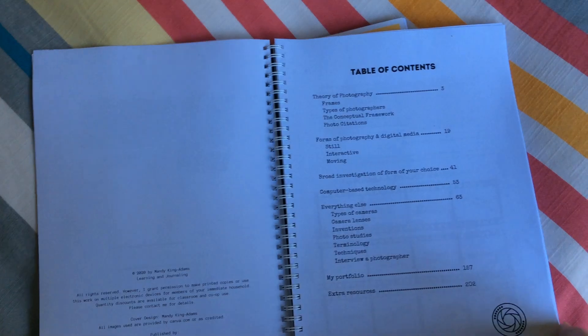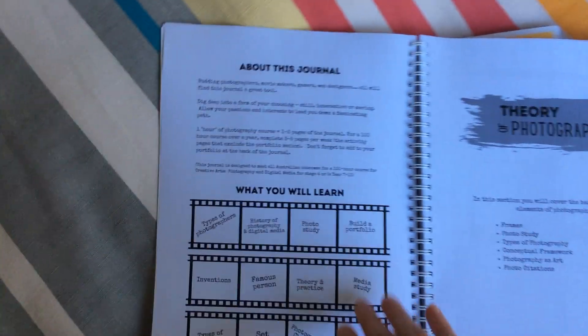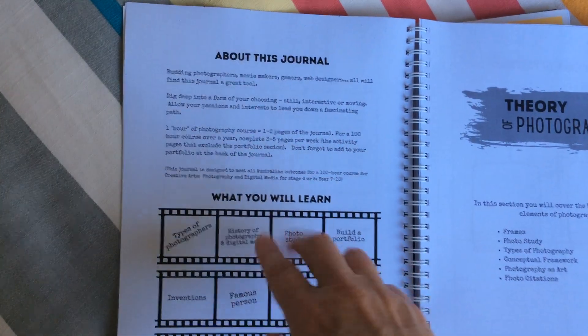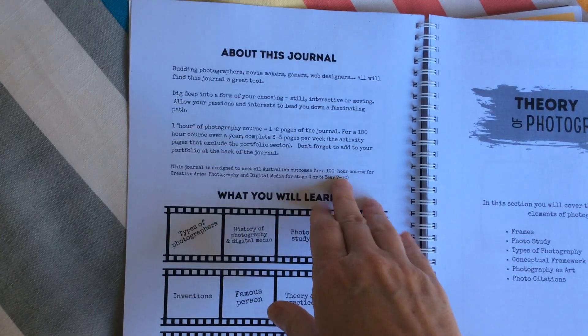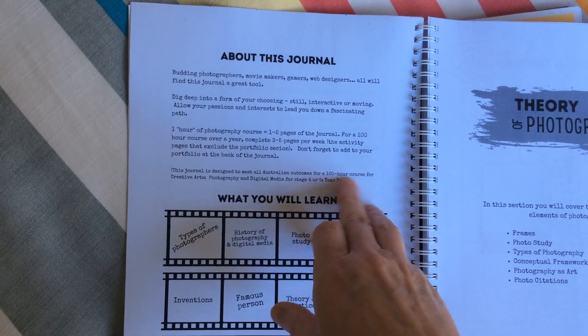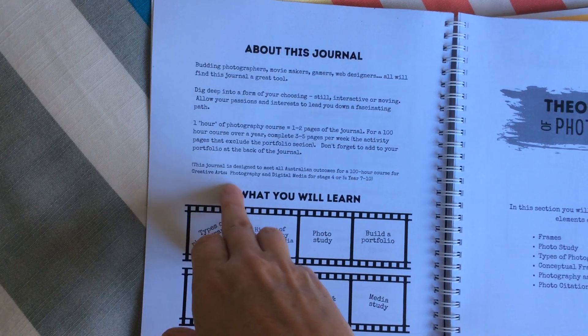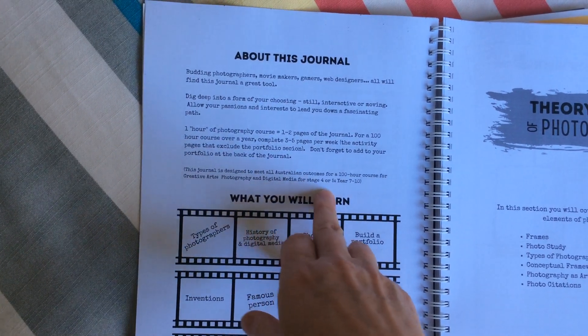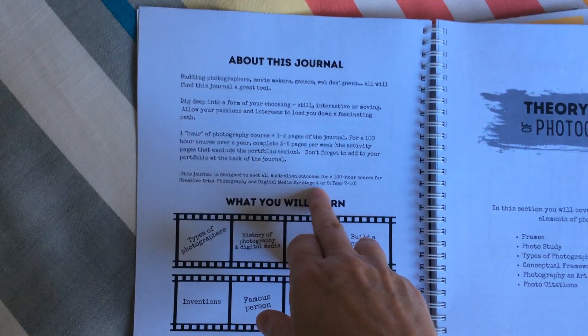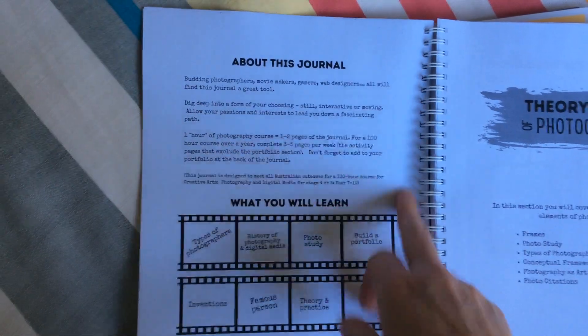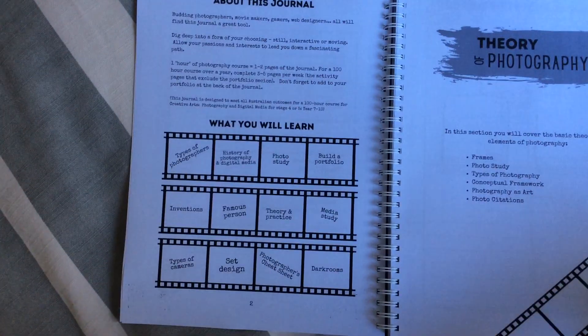This has been geared specifically if you are in Australia, so anyone anywhere can use this, but if you're in Australia and you're in high school, this counts towards the one year 100 hour course for Creative Arts, Photography and Digital Media. So any year of Stage 4 or Stage 5, this counts towards the Creative Arts.